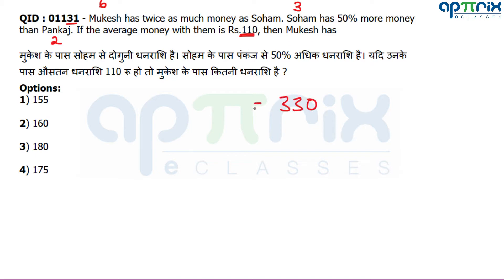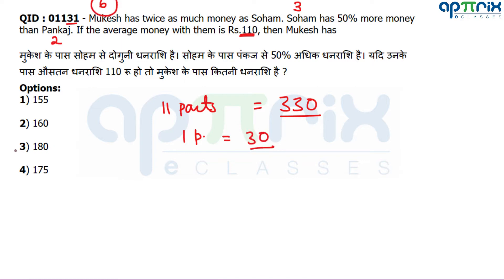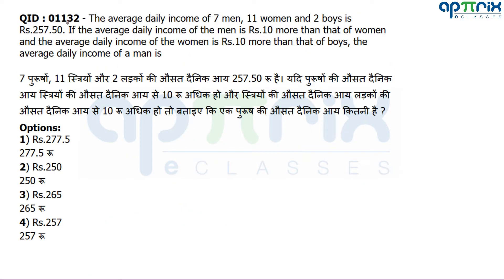Total is 330. The ratio of Mukesh, Soham and Pankaj is 6:3:2, which is 11 parts. So 11 parts = 330, meaning 1 part = 30. Mukesh has 6 parts, which equals 180 rupees. This is easy to solve without any problem.